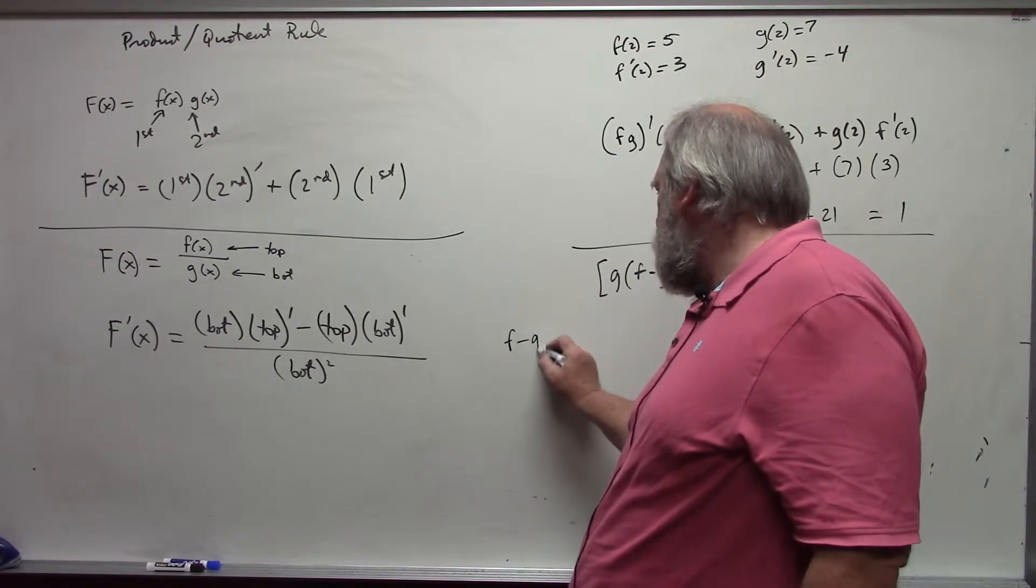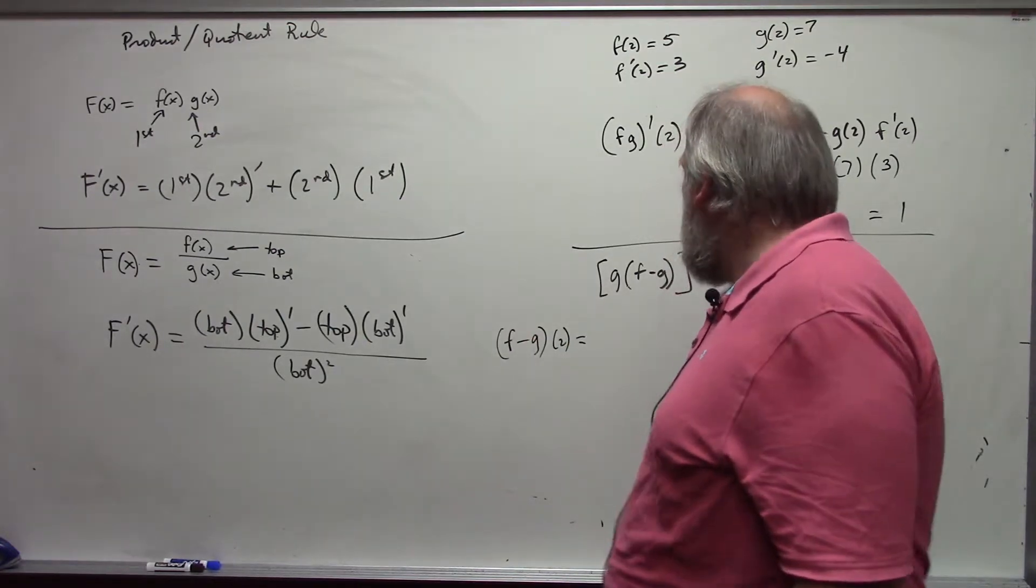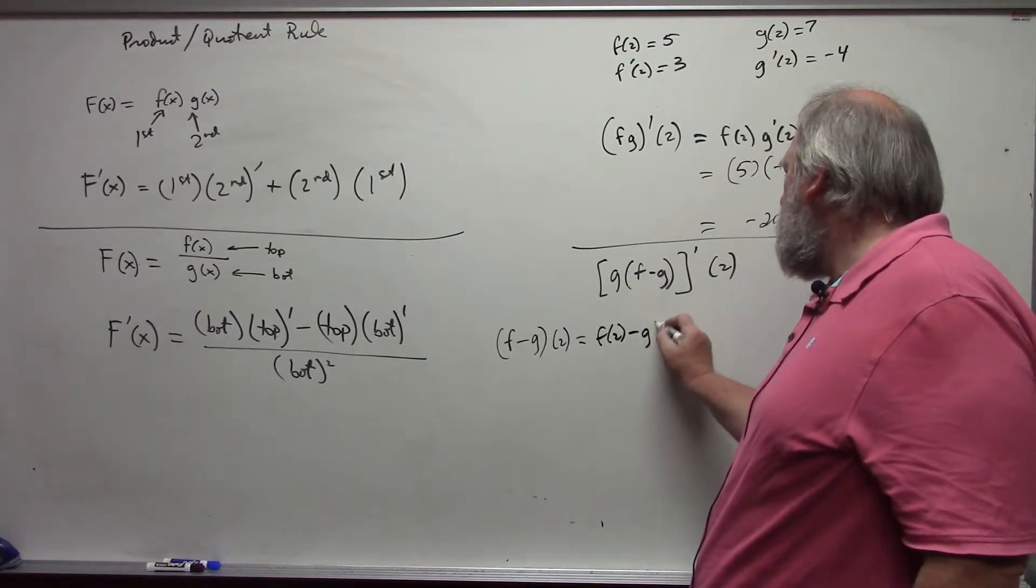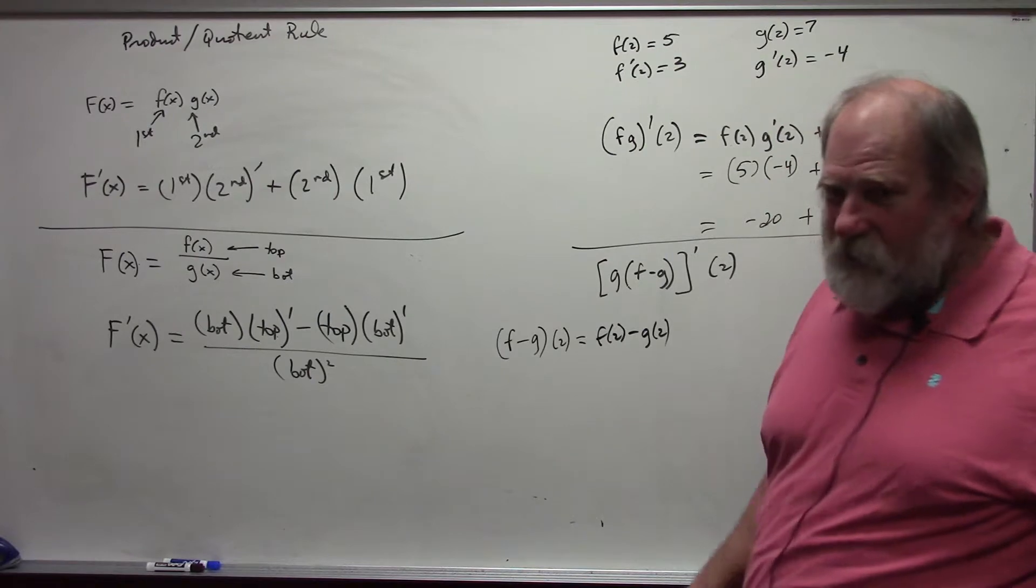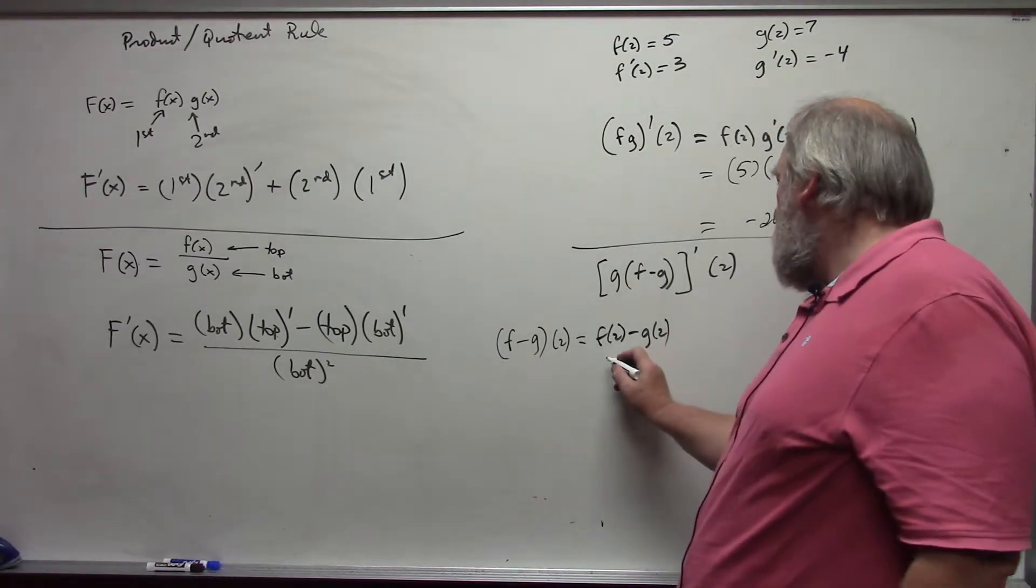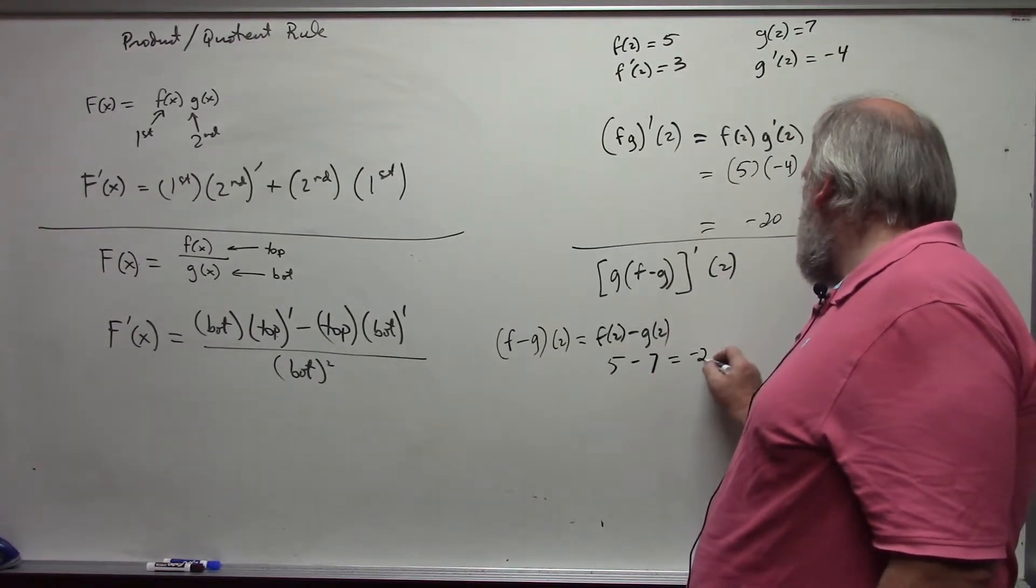F minus g at 2 would be f of 2 minus g of 2. Addition and subtraction, you can just break apart simply like that, and so this becomes 5 minus 7, which is negative 2.